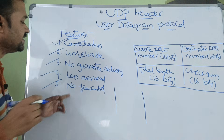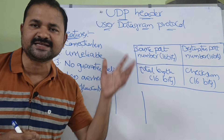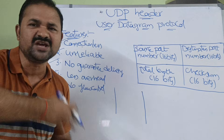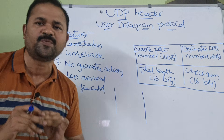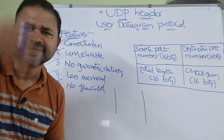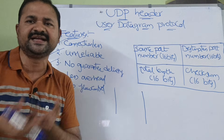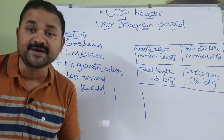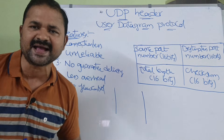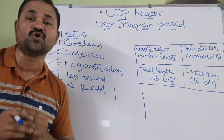The last feature is there is no flow control in UDP. The sender can send the data and packets at a very faster rate — there is no problem. We don't have any flow control mechanism on the receiver side. If the receiver can't process the data at a faster rate, then some of the packets may be lost. So, we can say that there is no flow control.